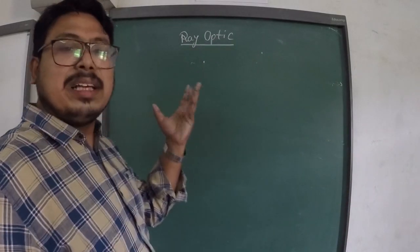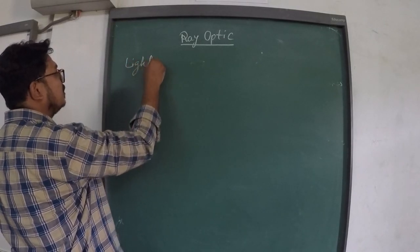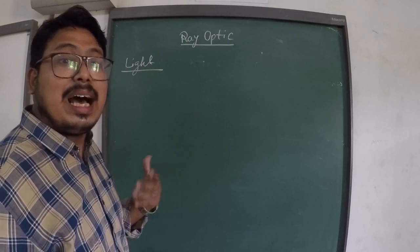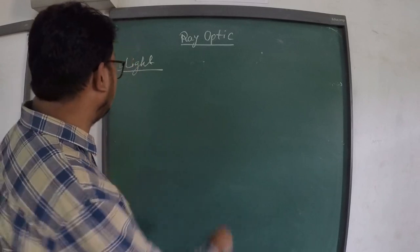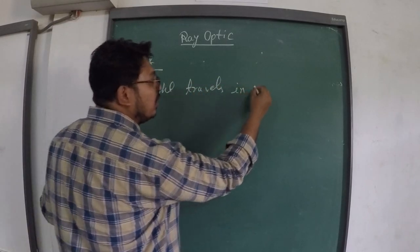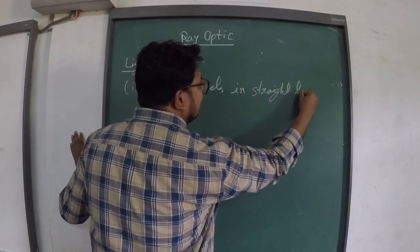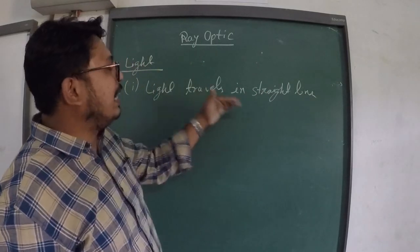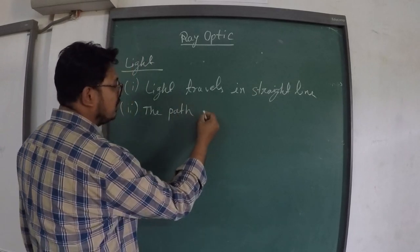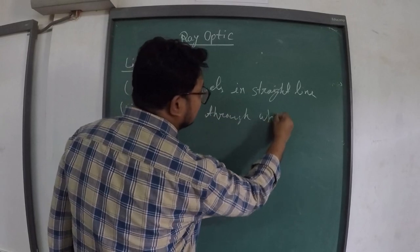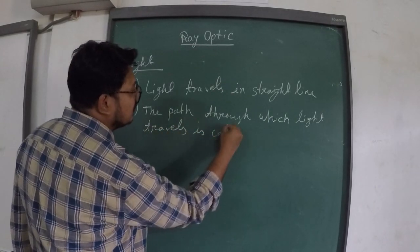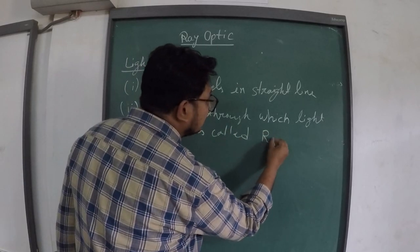Let's see some properties of light. We know that light is a part of the electromagnetic spectrum which enables us to see the objects around us. Property number one: light travels in a straight line. Not only light — any wave, any part of the spectrum always travels in a straight line. The path through which light travels is called a ray.